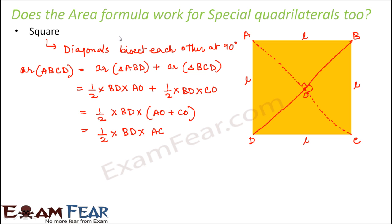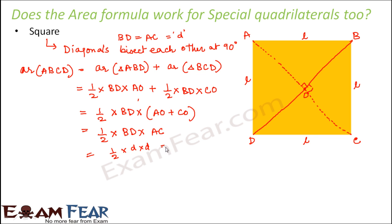In a square, the diagonals are also equal in length, so BD equals AC. Let us assume each diagonal has length d. Then the area becomes half into d into d, which equals d squared divided by 2. So we find that the area of the square is diagonal squared divided by 2.